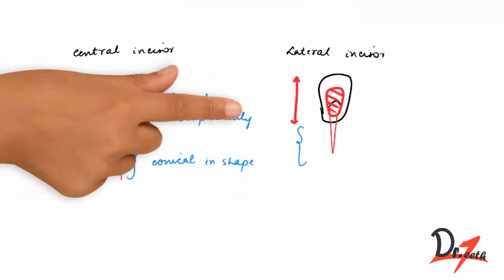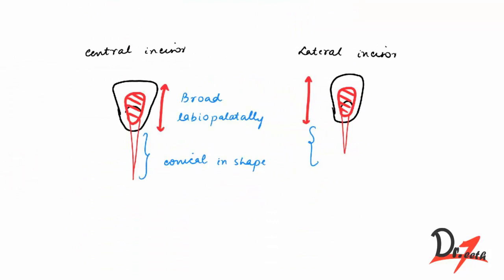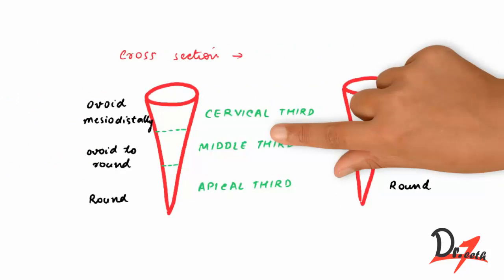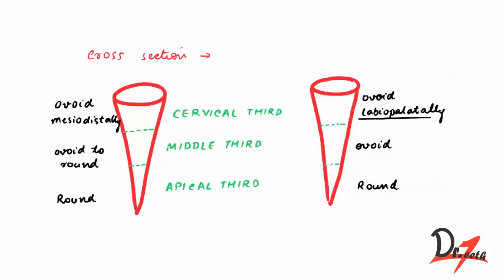Both the central and lateral incisors have canals that are broad labiopalatally and conical in shape. In cross-section at the cervical third, the central incisor is ovoid mesiodistally while the lateral is ovoid labiopalatally. In the middle third, the central incisor is ovoid to round, and the lateral is ovoid. At the apical third, both are round.